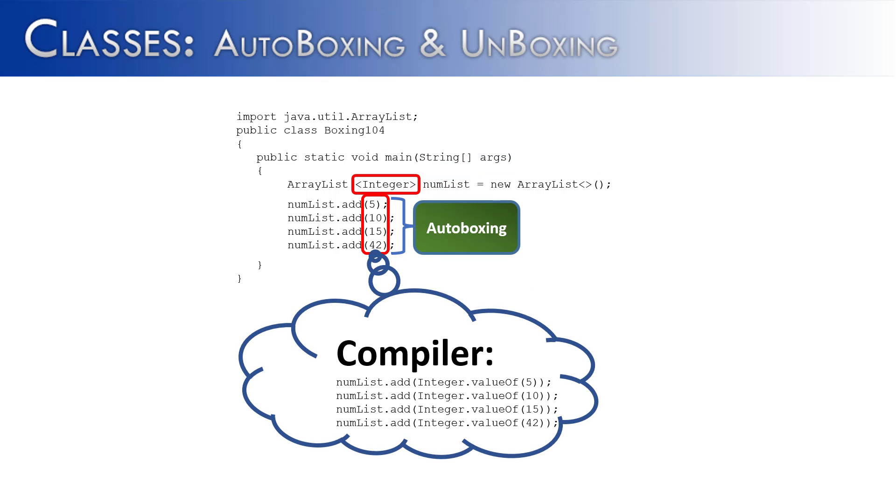What the compiler is doing for us is it's calling the valueOf method on all of those values, boxing them into integer objects, and then storing them into an ArrayList. And you can hopefully see the great value of autoboxing here.